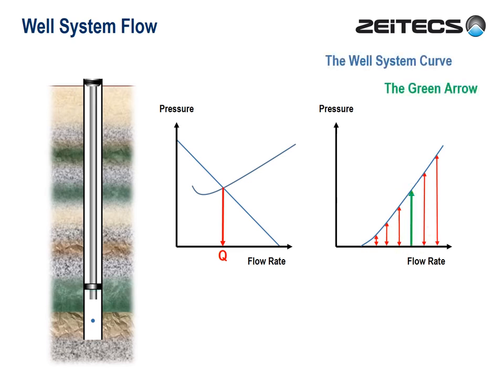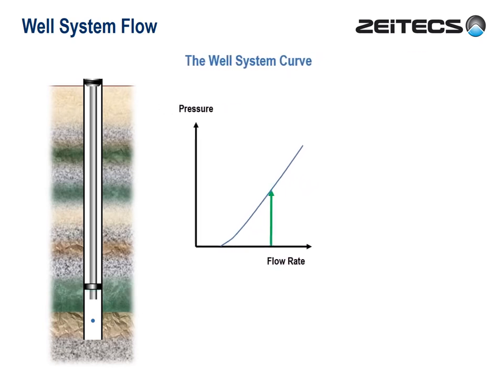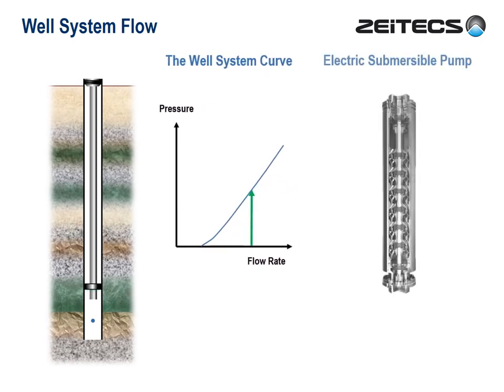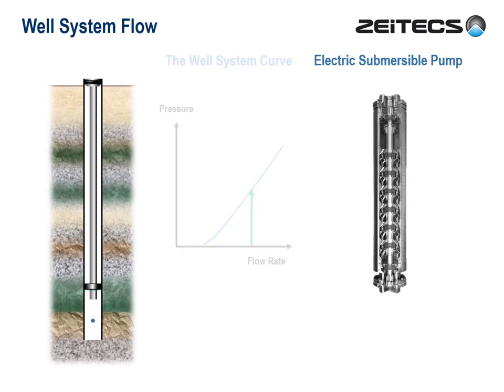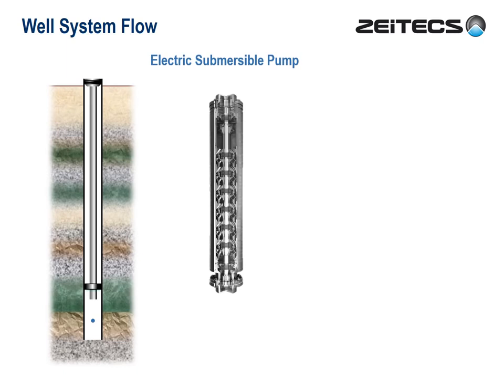Fantastic! The green arrow tells us how much artificial lift we need, and rumour has it that an electric submersible pump — or ESP — may be able to help us. Note: it is an electric submersible pump, and not an electric cowl submersible pump. Sadly, correct grammar is a scarce commodity in the oil field.